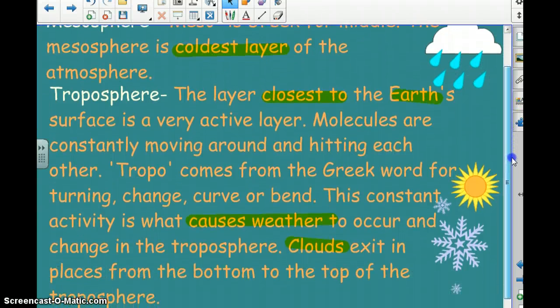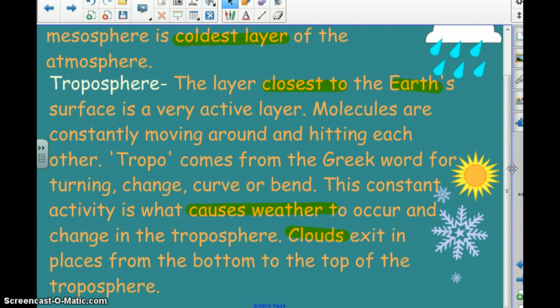And then we come to our troposphere. The troposphere is our closest layer. It's the one that we exist in. It's our very active layer. Things are always moving. Wind is moving storms and wind are moving clouds and wind is moving air. Tropo actually comes from the Greek word for turning or change or curve or bend. This constant change in activity causes weather. And weather occurs in the troposphere. It doesn't happen in any other of the layers. Clouds exist in places from the bottom to the top of the troposphere. Sometimes clouds will reach up into the one layer that we did skip. I just noticed that right now. It's probably on the next page. We have our mesosphere, but then we don't get to the troposphere. We skipped a layer, and then we get to the troposphere. So it must be the stratosphere.